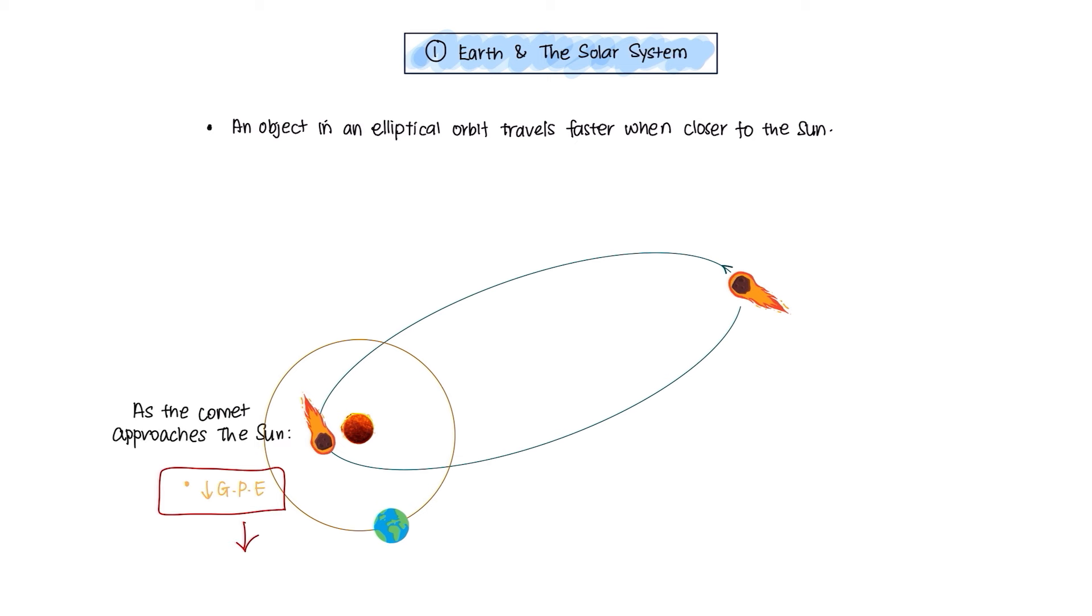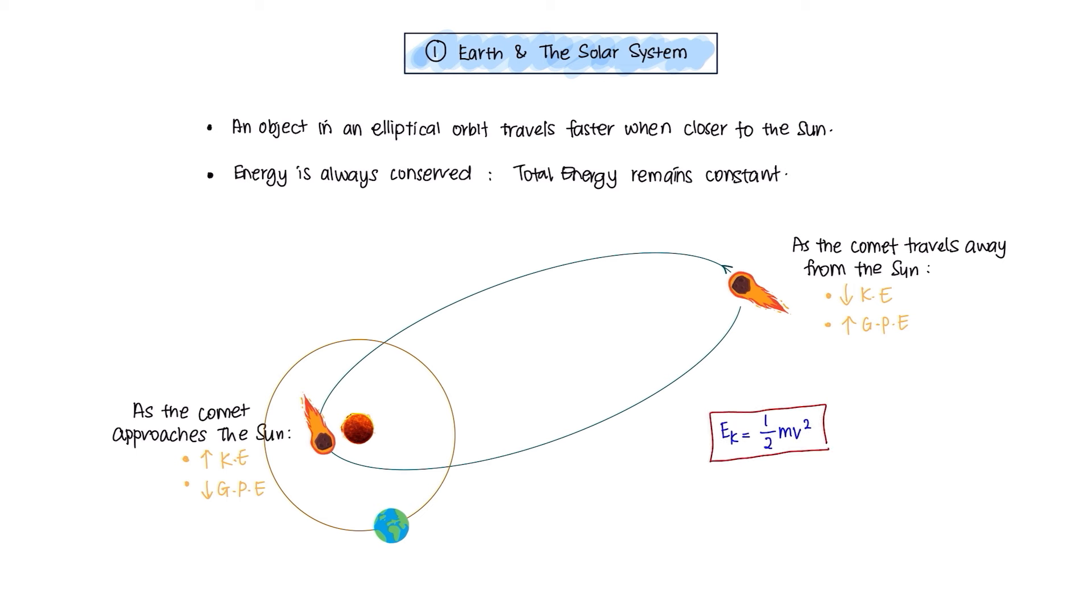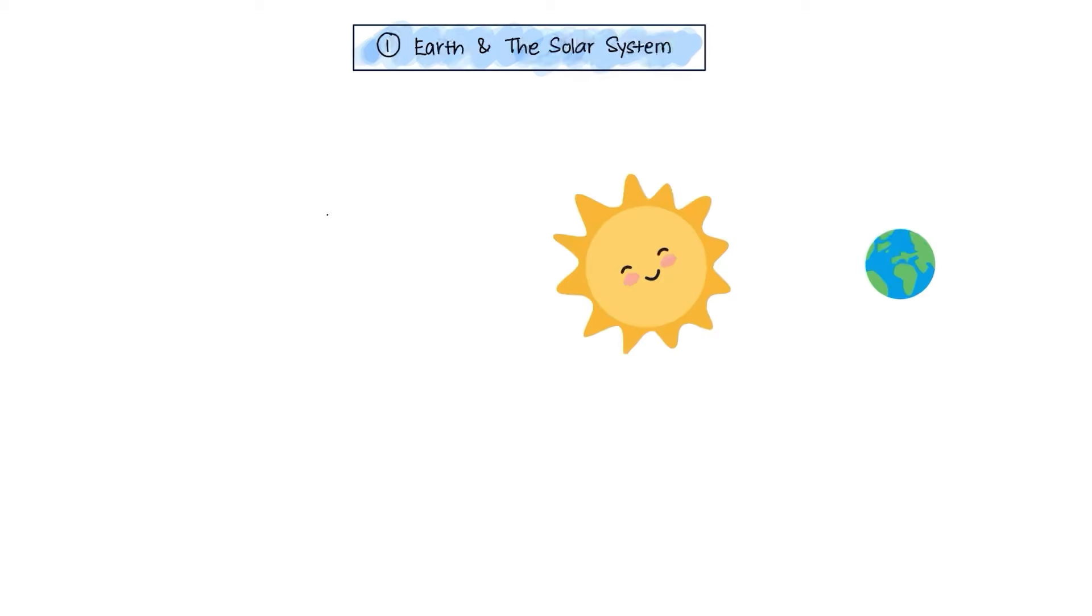But why? Gravitational potential energy decreases as planet gets closer to the Sun. This leads to the kinetic energy to increase. According to conservation of momentum, kinetic energy equals 1/2 mass times velocity squared. So, if the kinetic energy increases, the velocity increases too.